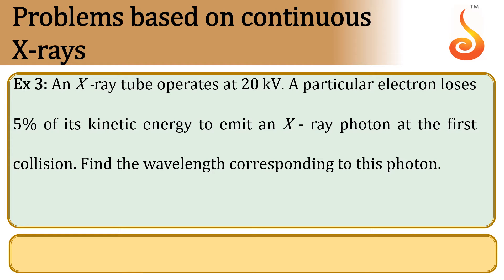Example 3. An X-ray tube operates at 20 kV. A particular electron loses 5% of its kinetic energy to emit an X-ray photon at the first collision. Find the wavelength corresponding to this photon.